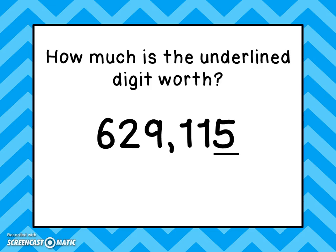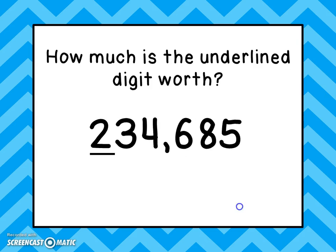Here we have the number six hundred twenty-nine thousand, one hundred fifteen. How much is the underlined five worth? That five happens to be in the ones place, so it is worth just five — it's five pieces.